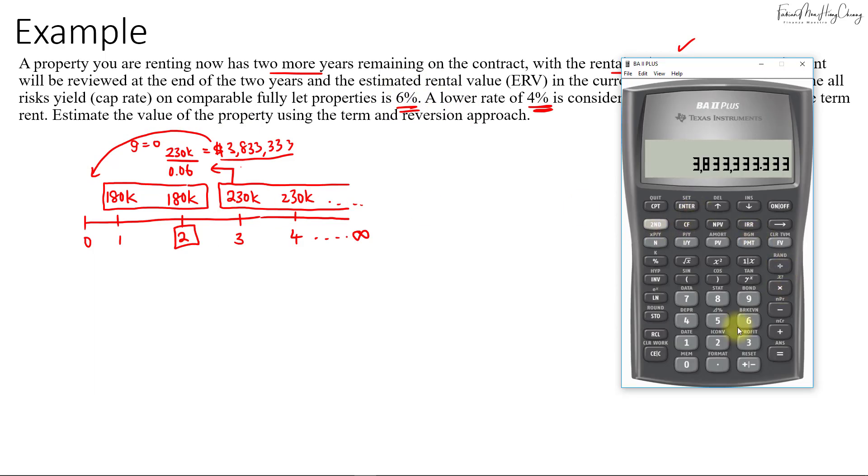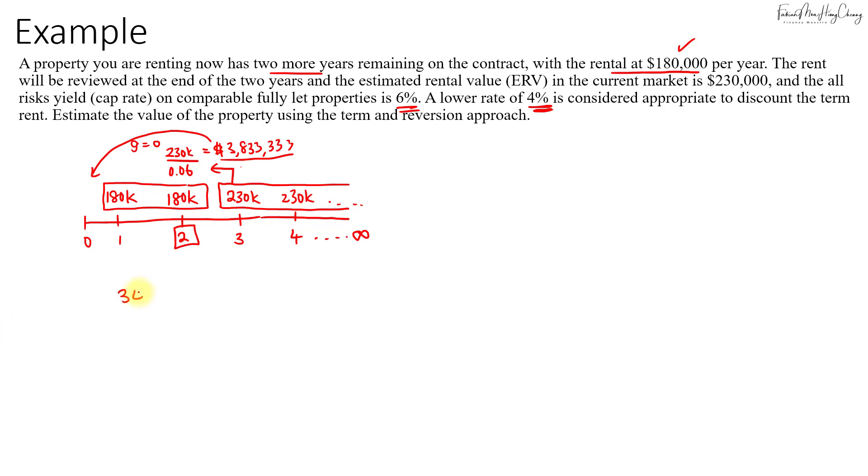We'll take this amount and divide by 1.06 to the power of 2. So that will be equal to $3.411 million. Okay, so this is the value of the reversion.